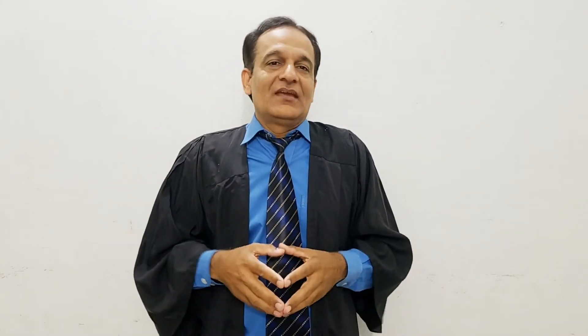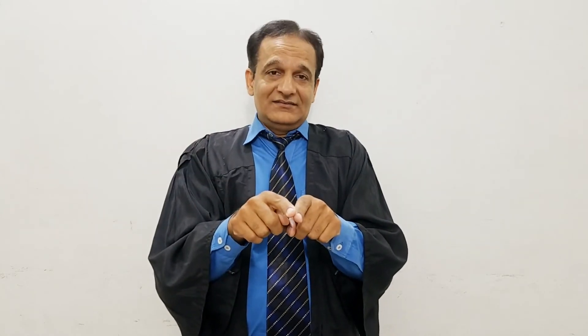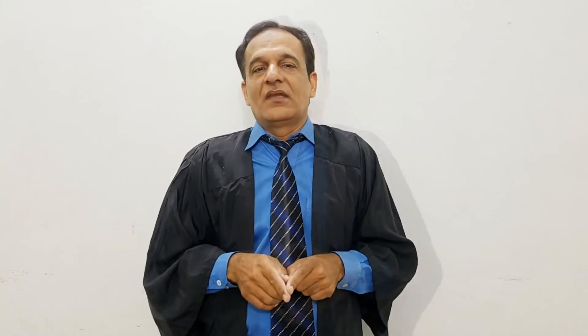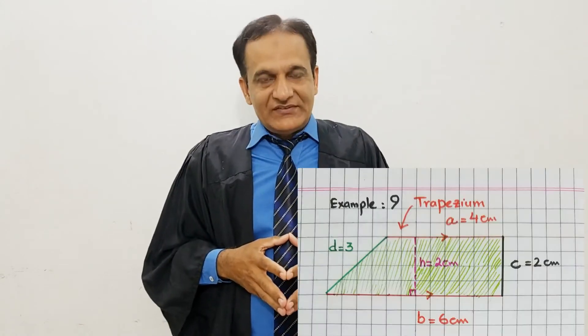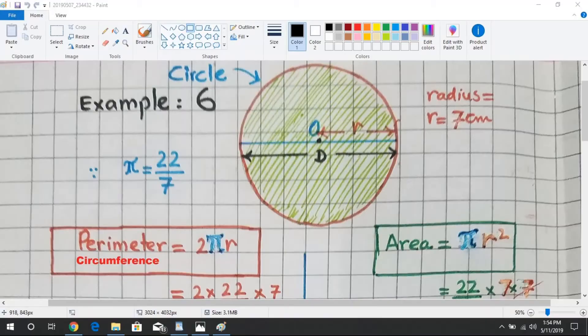In this course I will teach you about the area and perimeter of all the geometrical shapes. We have a square, rectangle, triangle, circle, trapezium, and half circle.